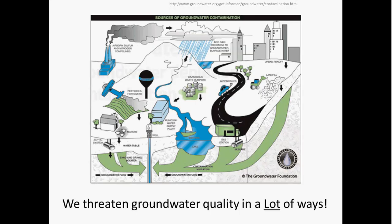Groundwater contamination can occur naturally. Arsenic contamination in groundwater, for example, is very widespread — it affects millions of people around the world, and in most cases the most widespread examples of that are natural arsenic contamination. It occurs naturally. There are many cases, however, where our activities cause groundwater contamination.